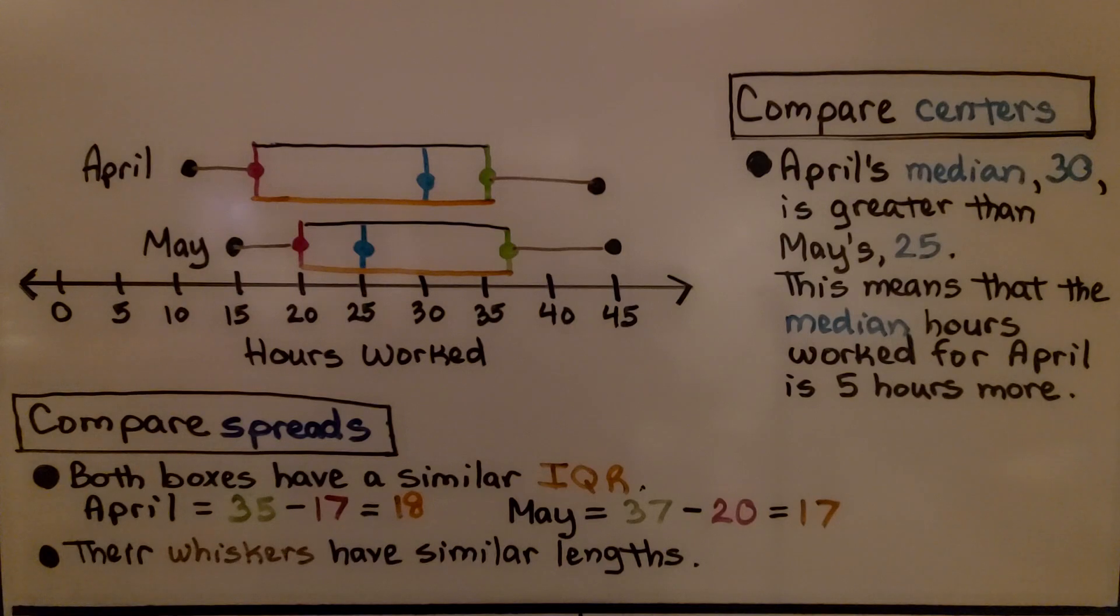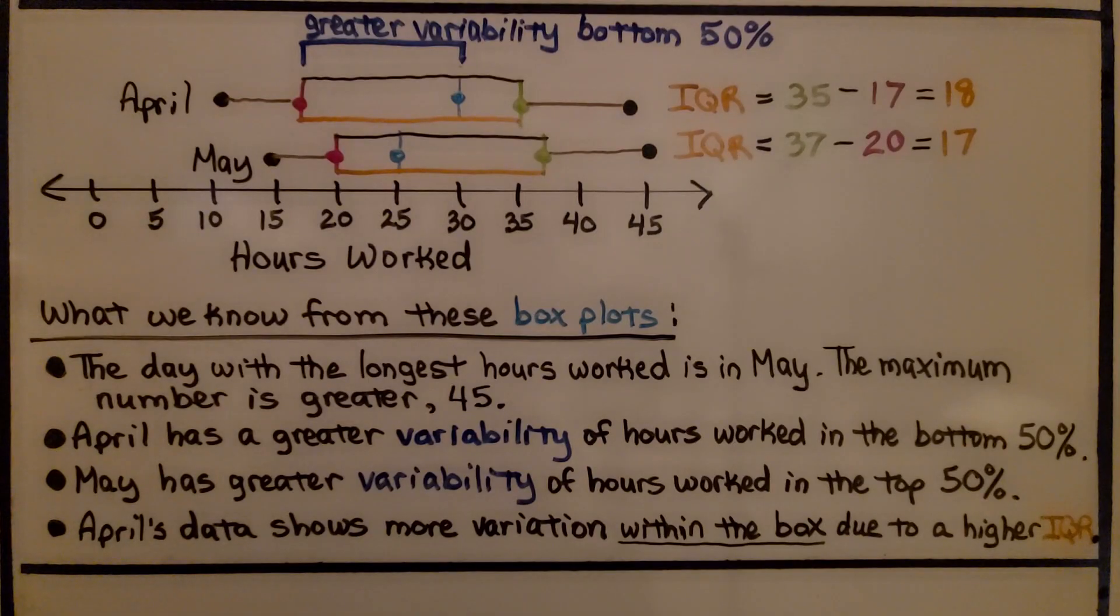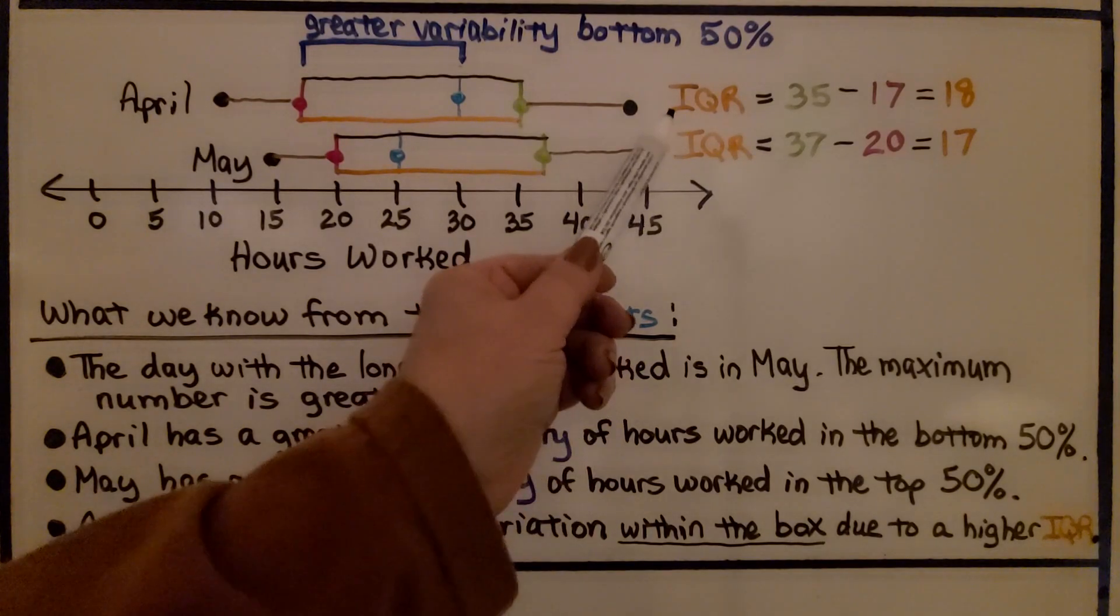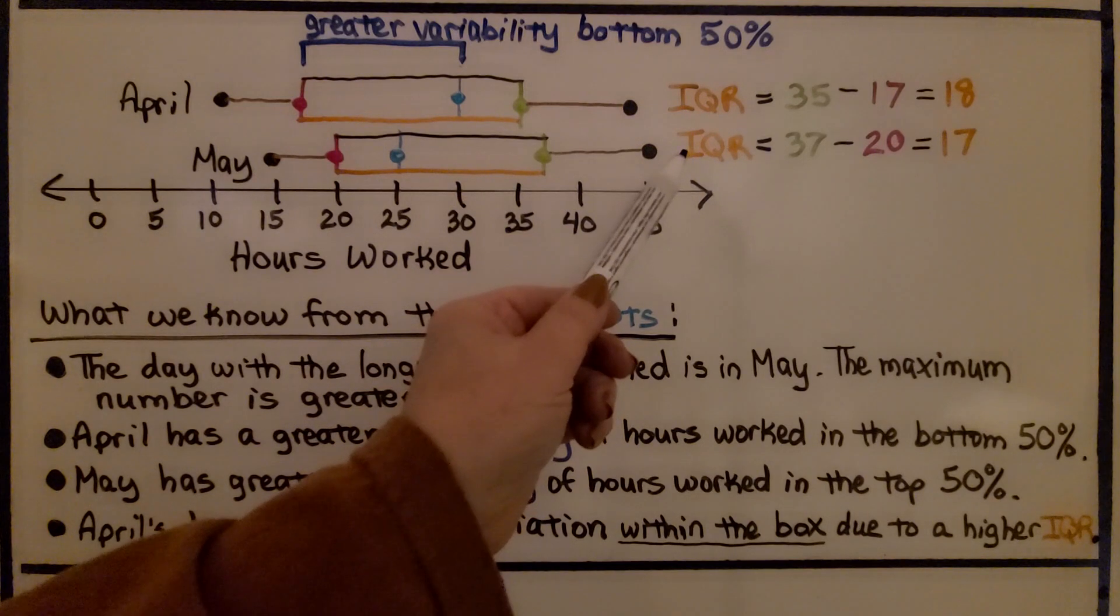And their whiskers have similar lengths. This one's similar to this one, and this one's similar to this one. So here we can see the IQR for April and the IQR for May.